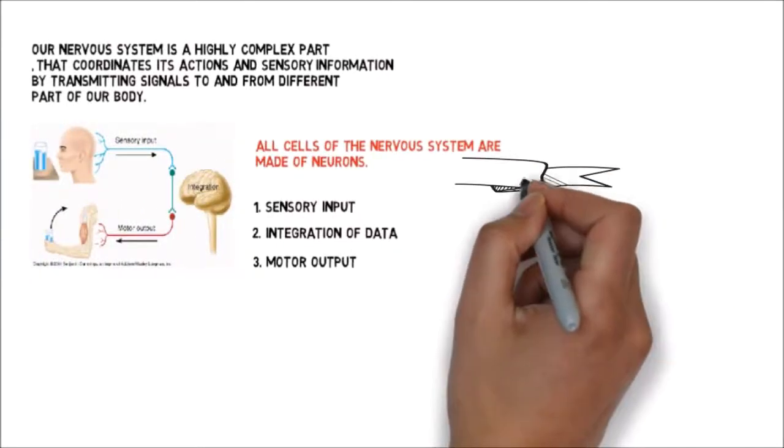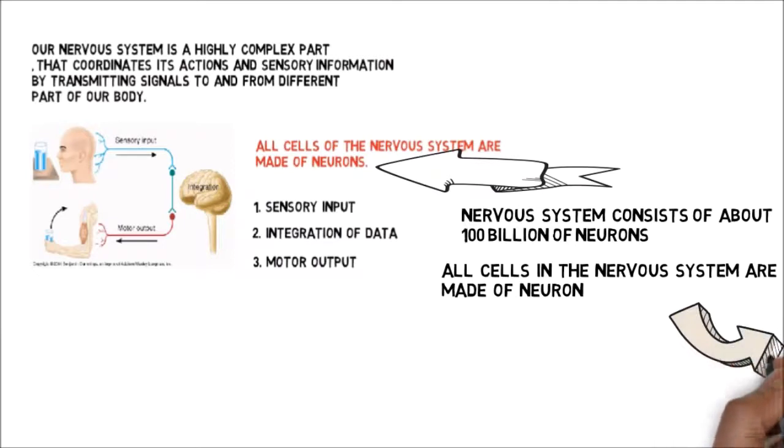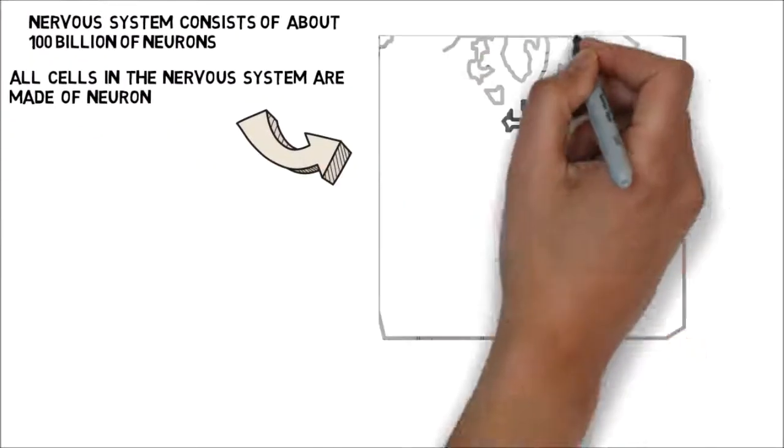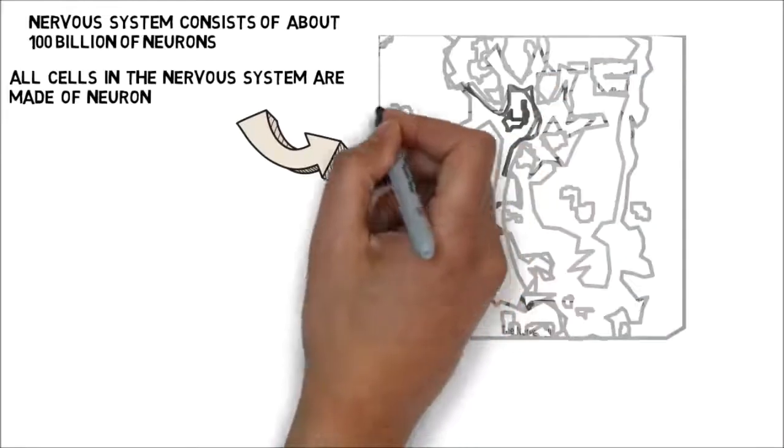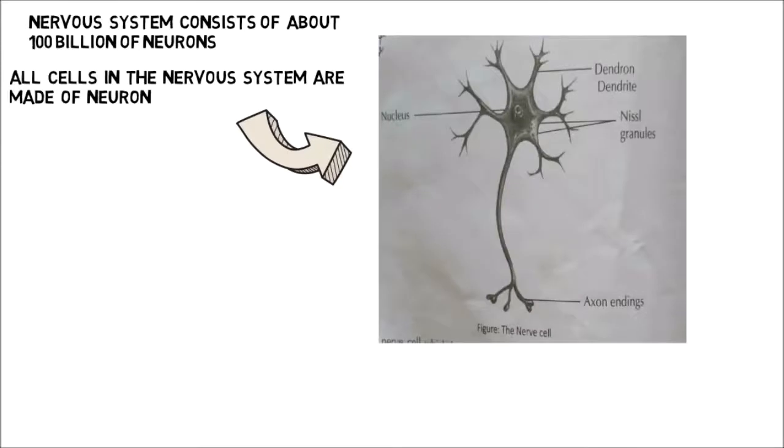Our nervous system consists of about one hundred billion neurons, which are its simple parts. The neuron is the structural unit of the nervous system. Neurons are specialized to carry messages through an electrochemical process. A neuron is a nerve cell which has two types of branches: one single axon and a number of dendrites. Dendrites bring electrical signals to the cell body and axons take information away from the cell body.